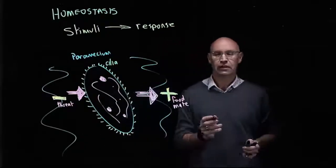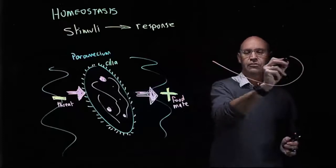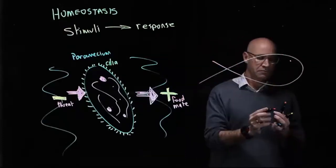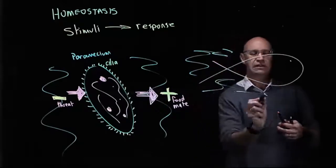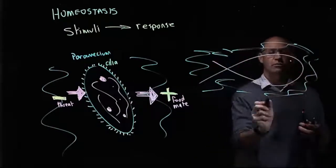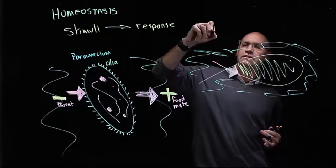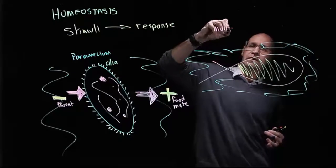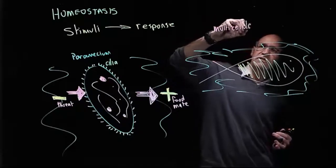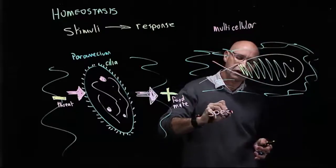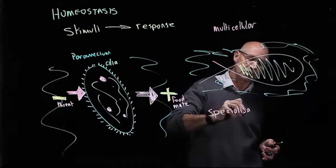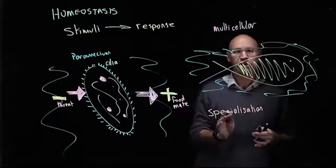Now let's have a look at a more complex organism, again one that lives in water. This time we've got a fish. So it's a multicellular organism, and when we've got a multicellular organism, we see specialization. What that means is that there are specialized cells that have specialized functions.